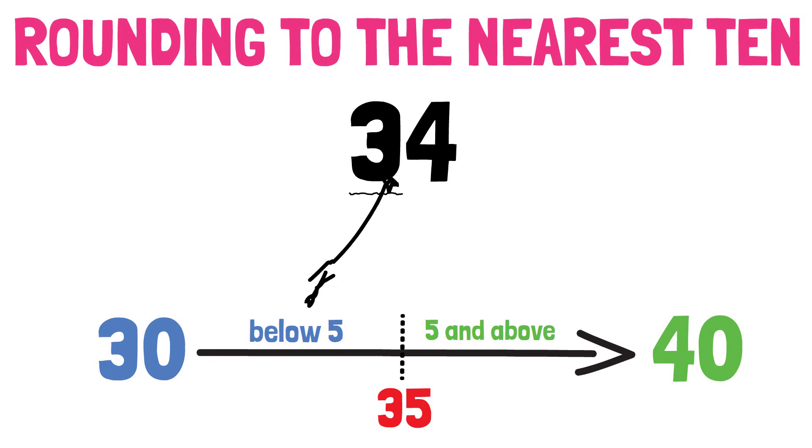The tens number on the left is 30. So, when we round 34 to the nearest ten, we get 30.